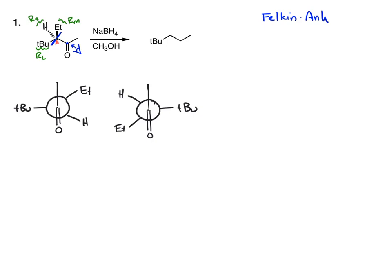Here's our carbonyl carbon. The nucleophile needs to attack that from the side opposite our large group. Be careful — don't try to add the nucleophile at a 60-degree angle with the carbonyl. The Bürgi-Dunitz trajectory is a 107-degree trajectory. So it could add there or here — which one eclipses the smaller atom? The one on the right. So that's how the nucleophile is going to add. We're going to use that Newman projection.